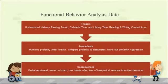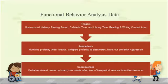In analyzing the functional behavior analysis, I learned his triggers were an unstructured hallway and passing period, cafeteria time, library time, and reading and writing content area. His antecedents started with mumbling profanity under his breath, whispering profanity to classmates, and eventually blurting out profanity loudly. Consequences consisted of a verbal reprimand, name on the board, a minute hold after class, loss of free period, and eventually removal from the classroom environment.